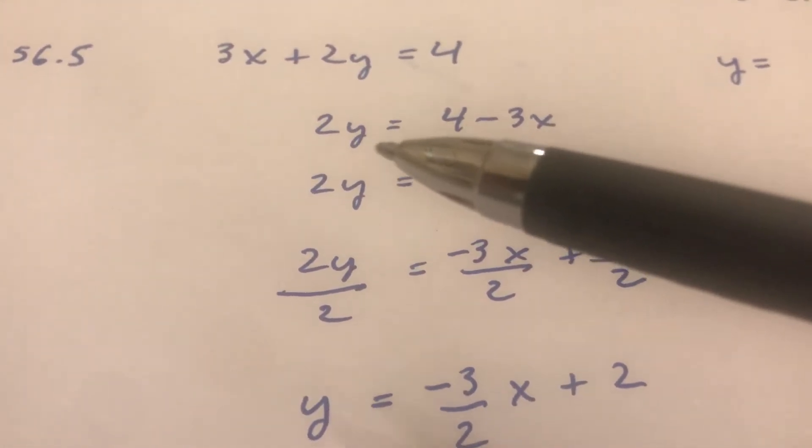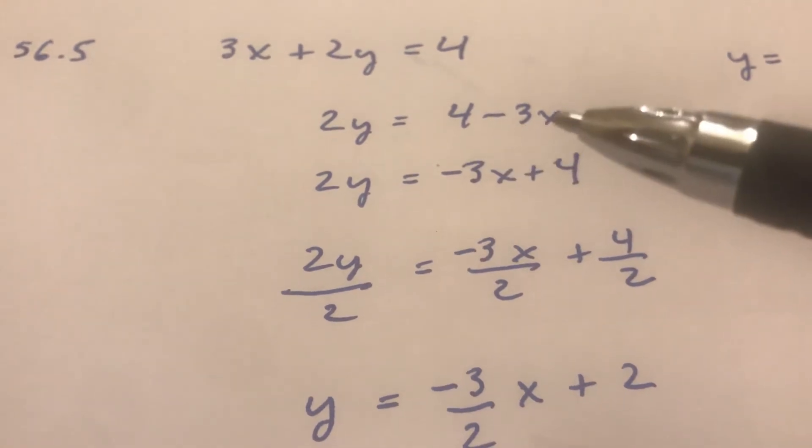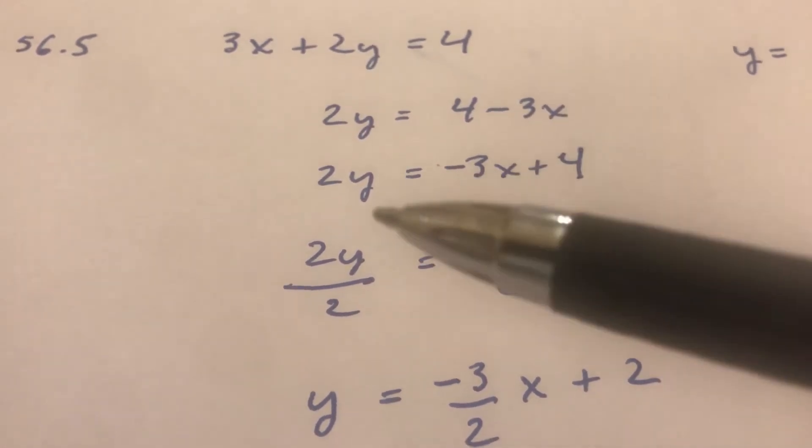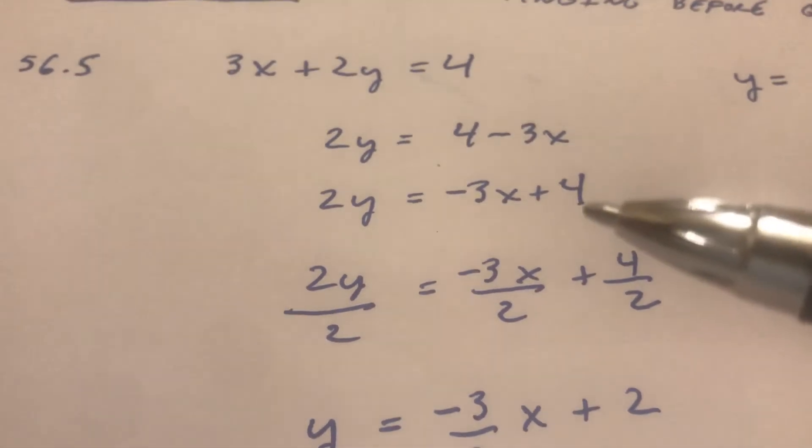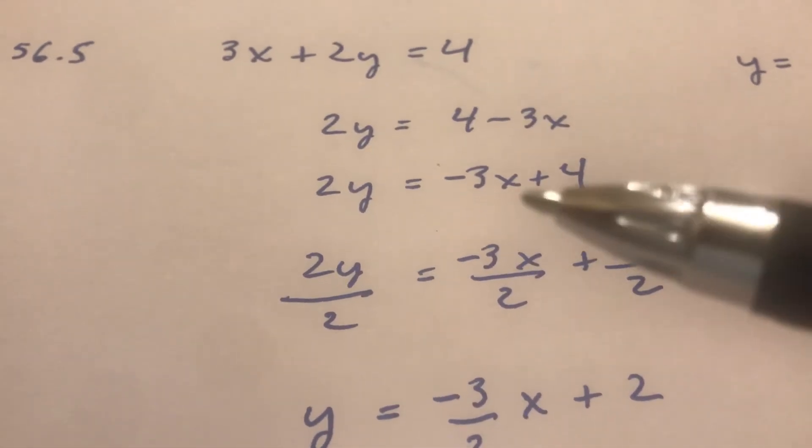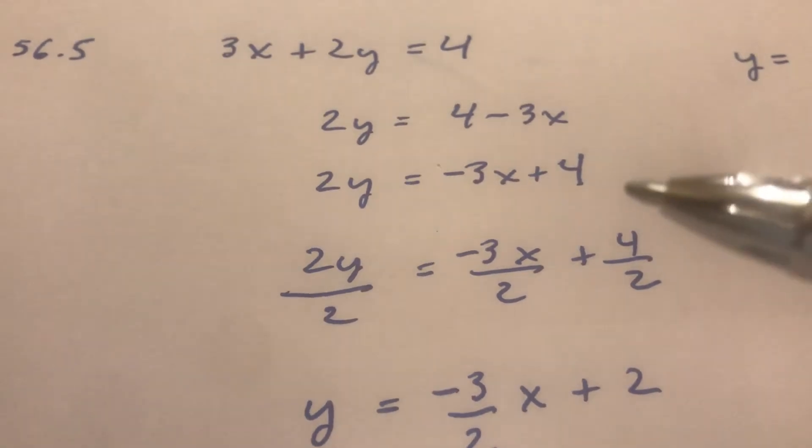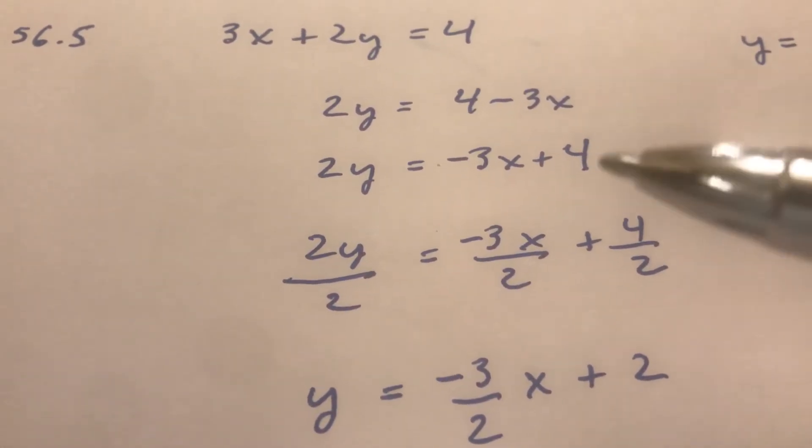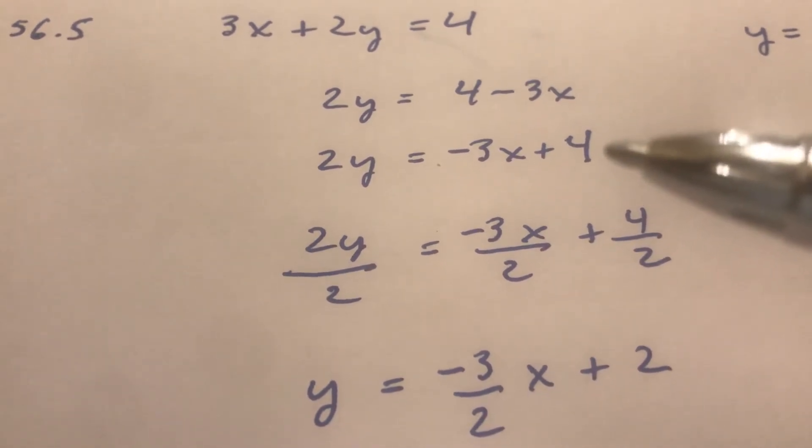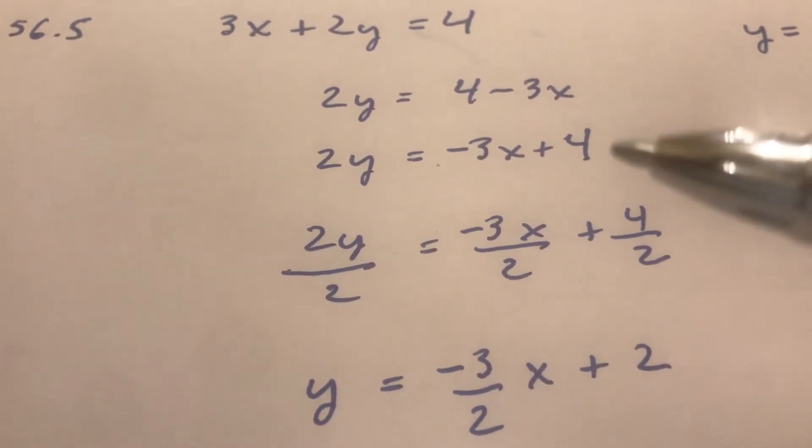So you could write it like this: 2y equals 4 minus 3x. A more proper way to write it would be 2y equals negative 3x plus 4. We talked about descending order - you like it in descending order. They're both correct so you can use either but this is the more proper way.